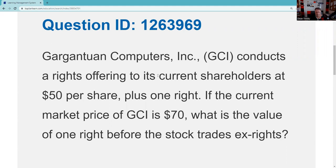This QID is 126-3969. Gargantuan Computers conducts a rights offering. As an existing shareholder in Gargantuan Computers, one of the rights you have is your right to maintain proportionate ownership. That means existing shareholders have the first right of refusal on the issuance of new shares. In a rights offering, the company raises additional equity financing through the sale of common stock, and the most likely people to provide that financing are existing owners — and not only are they the most likely candidates, they also have the right to maintain their proportionate ownership. The offering is to current shareholders at $50.